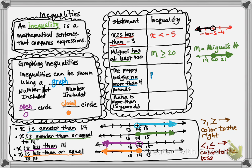The puppy weighs no more than a certain weight. No more than means it could be that number or something less — that's a less than or equal to symbol. Let P be the puppy's weight. Always need to define our variables. When I graph it, three tick marks: four in the middle, three in front, five in the back. Or equal to is also a closed circle, and then we color to the left for less than.